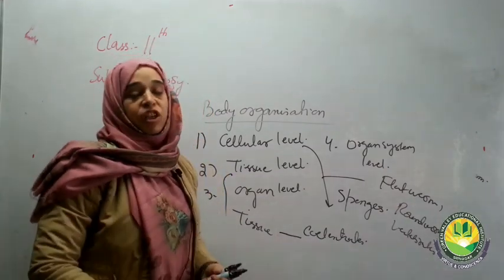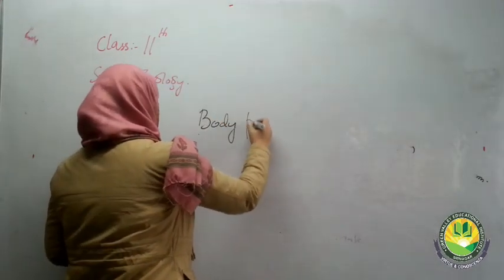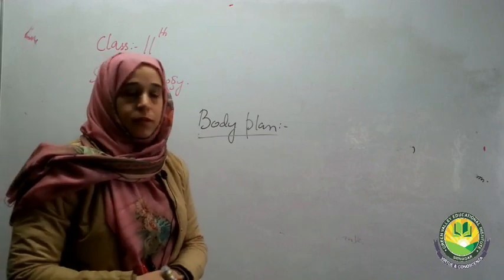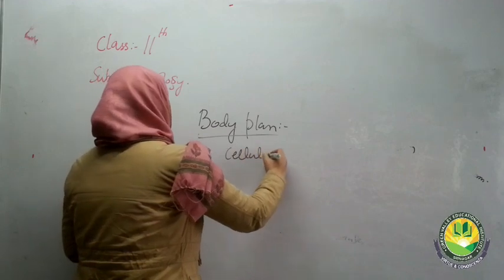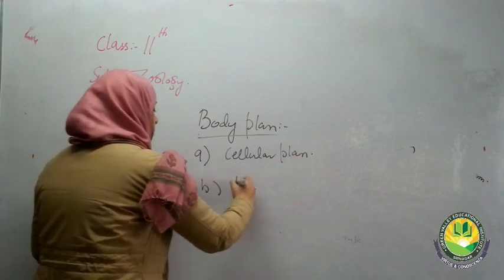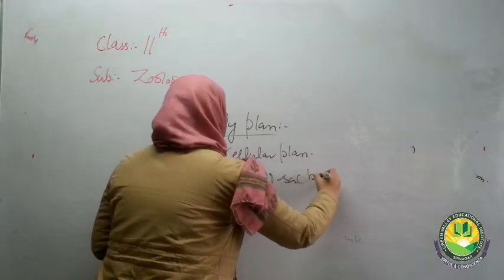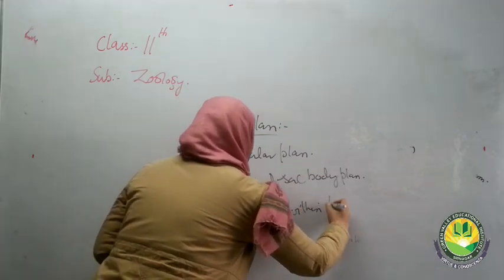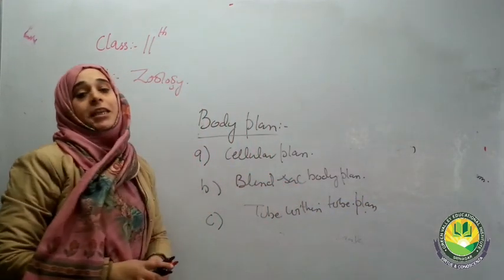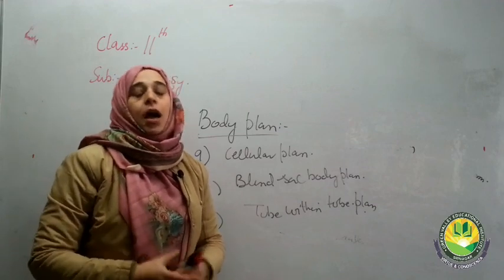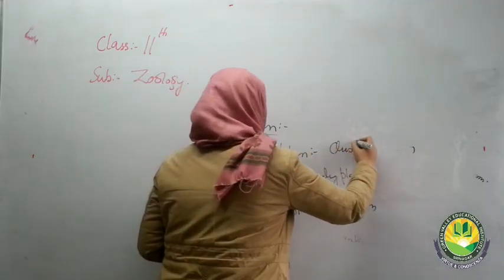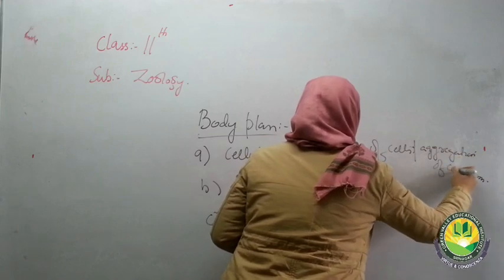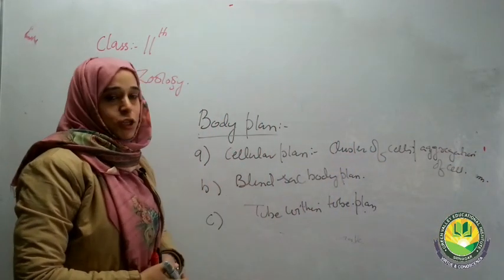Now the second basis of classification is body plan. Animals can be classified into three types based on body plan: first, the cellular body plan; second, the blind sac body plan; and third, the tube within tube body plan. In the cellular body plan, organisms contain an aggregation or cluster of cells with no coordination among one another, as seen in sponges.